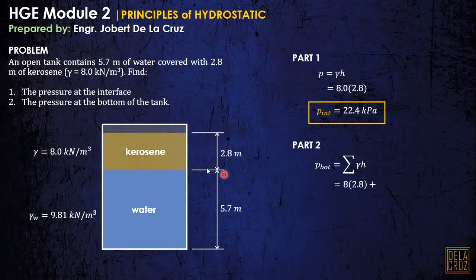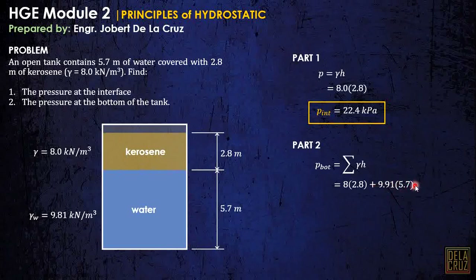That is just the pressure up to the interface — gamma times height — plus we add the pressure due to the water layer up to that point. So that will be 9.81 times 5.7. The total pressure here is 7.32 kPa... actually that's the incremental water contribution. Adding the contributions, we get the total pressure at the bottom.